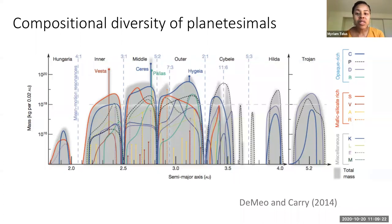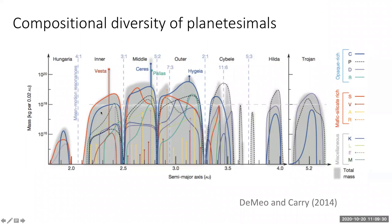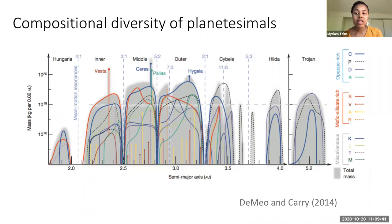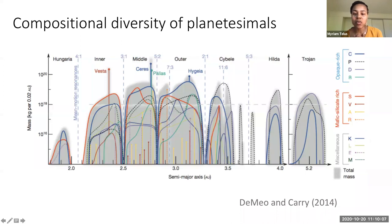Most of these objects are in the asteroid belt. This graph shows what we know about the compositional diversity of planetesimals. It's showing the mass of material in the asteroid belt relative to the distance from the sun. Information for different asteroid groups are highlighted in various colors — the carbon-rich ones are bluish colors, and the red ones are the silicate-rich asteroids. You can see from this that it's well-mixed in terms of compositional diversity.